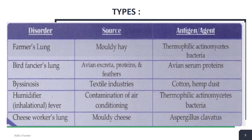Bacinosis is also very important. Cotton or hemp dust is the antigen and the source is textile industries. Humidifier inhalational fever: thermophilic actinomycetes bacteria also causes this condition and its source is contamination of air conditioners.